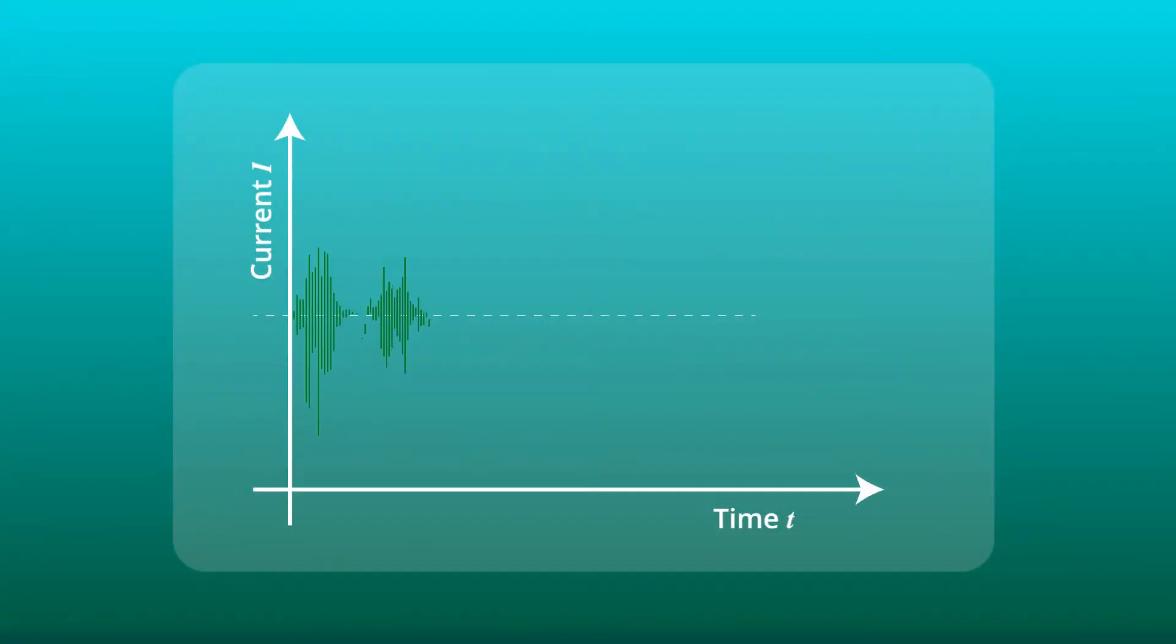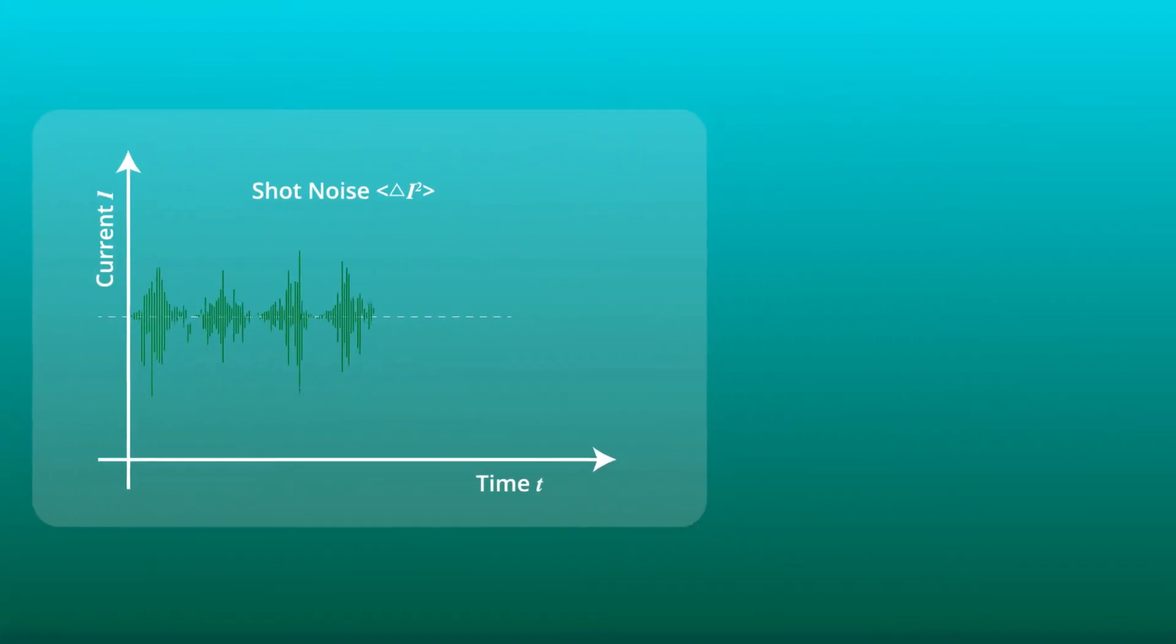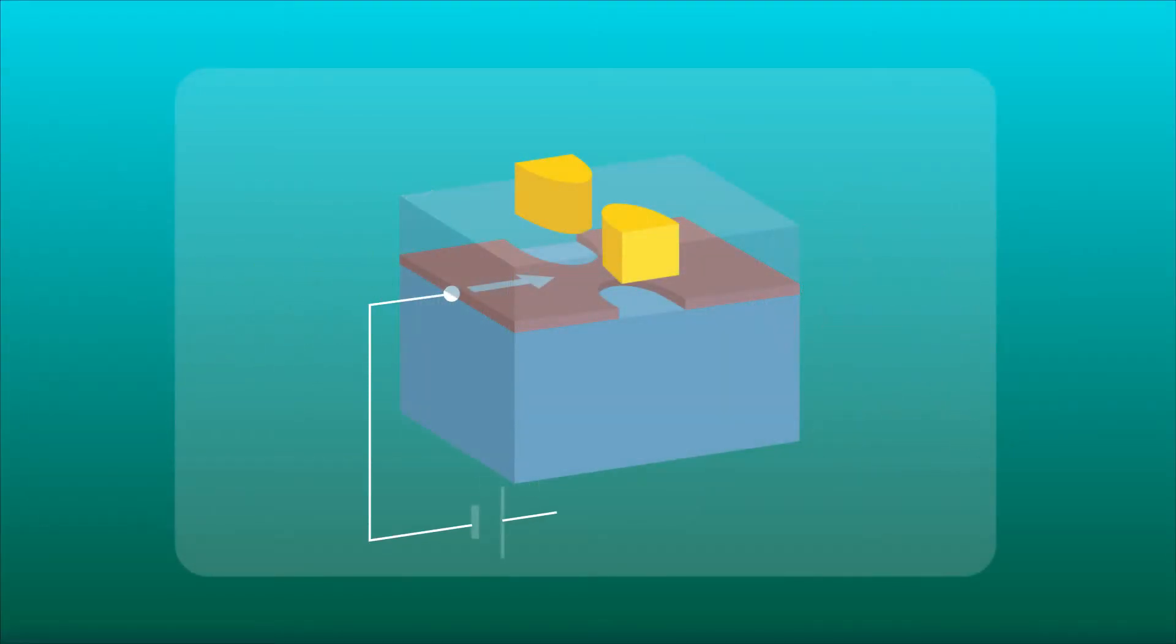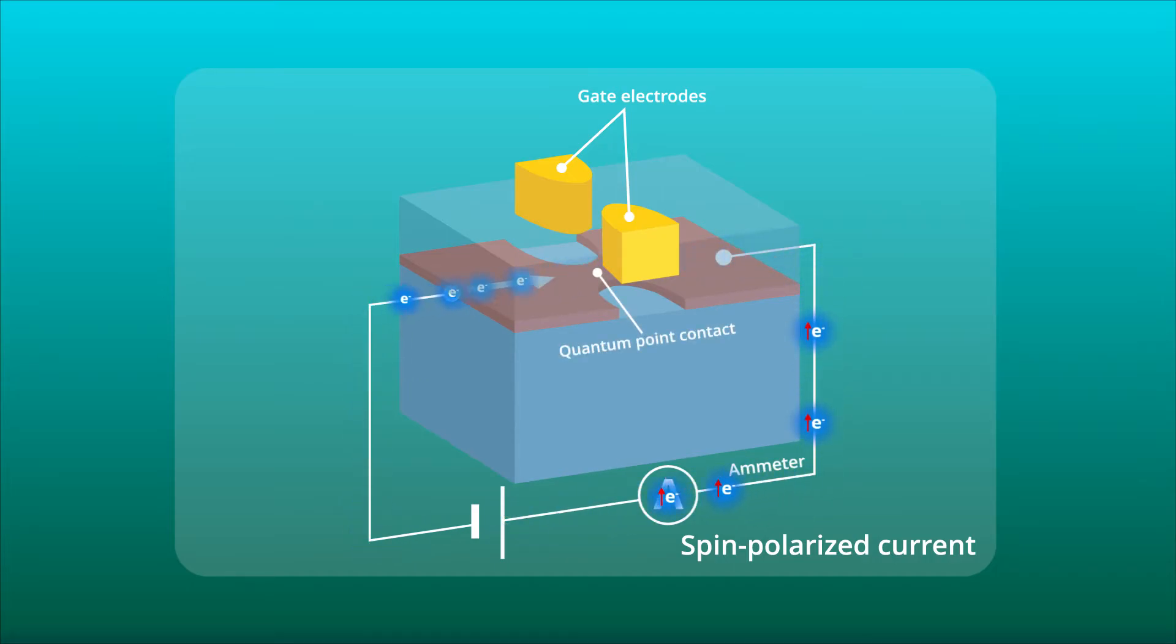Shot noise studies have revealed unique information about a system modeled within a single particle picture. For example, the measurements enable us to evaluate the spin polarization of an electronic current flowing through a mesoscopic solid-state device, such as a quantum point contact.